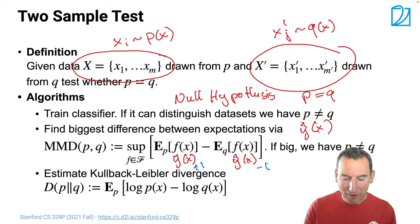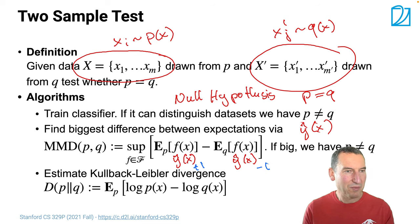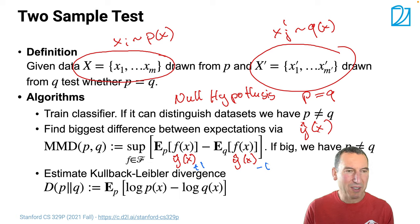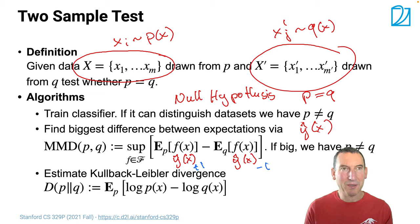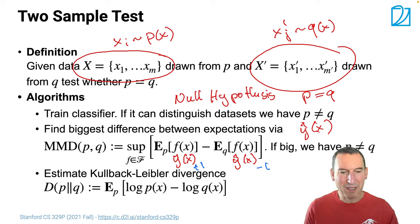Likewise, if we have some function f that is primarily large for p and small for q, we can in most cases fashion it into a classifier. MMD is a little bit more generous because you could engineer classifiers with chance-level accuracy that still have a large MMD value, but the converse is not true.